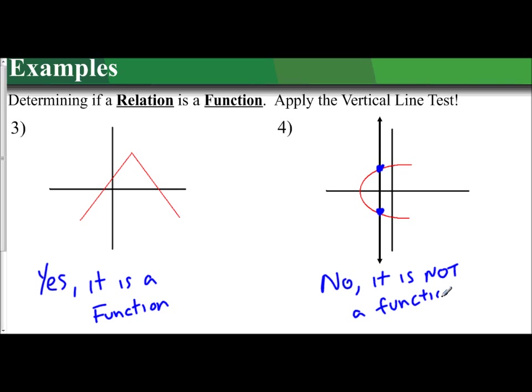So that's how you apply the vertical line test. Just imagine a vertical line being dragged across the graph. If you see it intersect more than once, then it's not a function. If it intersects only once, then it is a function.